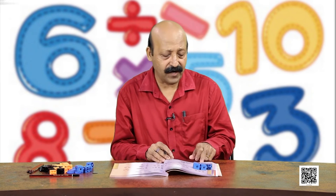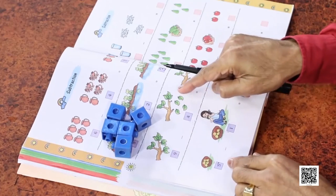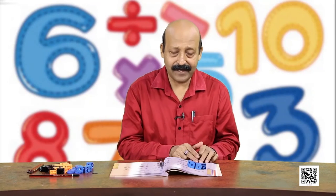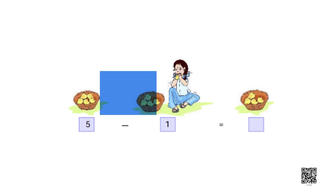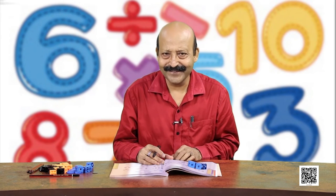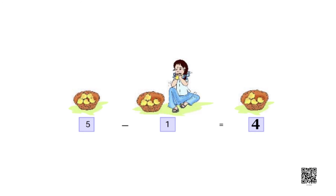Now you have many ways of finding the answer: using objects, using your fingers, counting the pictures in the book, or writing the numbers. Let us do 5 minus 1. There are 5 mangoes, one has been eaten. How many mangoes are left? 1, 2, 3, 4 — 4 mangoes are left. So we write: 5 minus 1 is equal to 4. Now it's your turn — write it down.